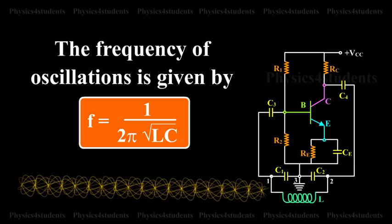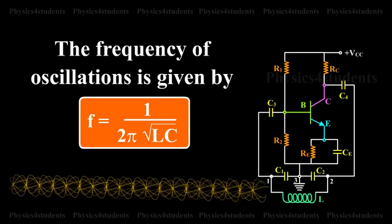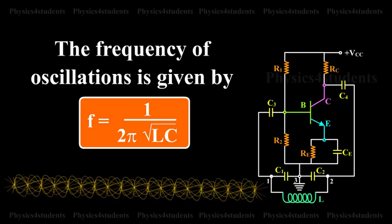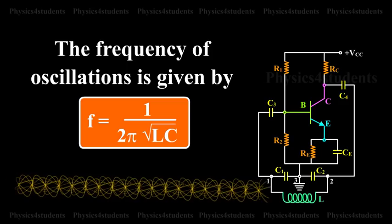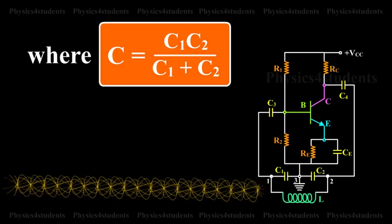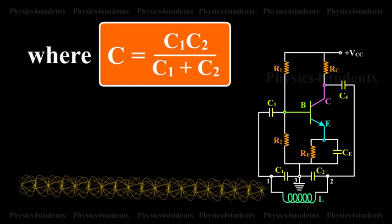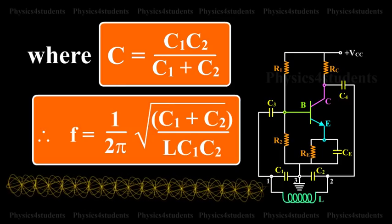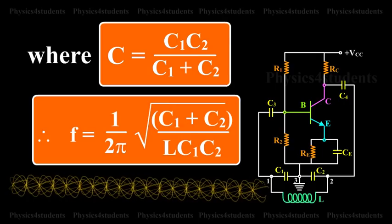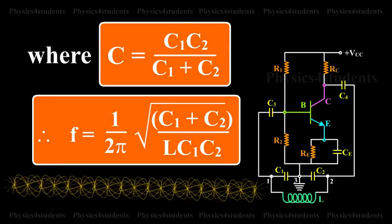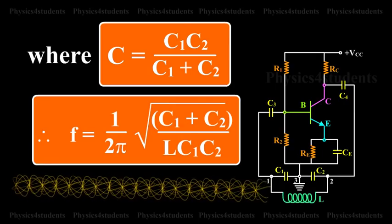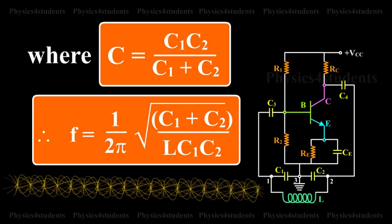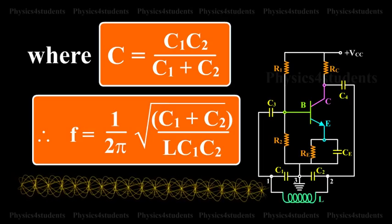The frequency of oscillations is given by f equals 1 divided by 2π times root of LC, where C equals C1 times C2 divided by C1 plus C2. Therefore, f equals 1 by 2π times the root of C1 plus C2 divided by L times C1 times C2.